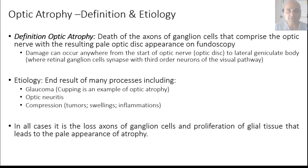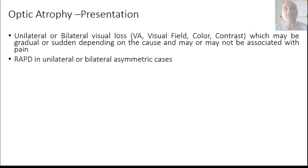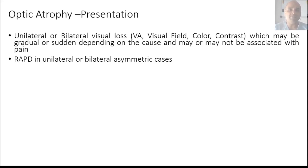Optic atrophy manifests in the optic disc because it is the place where axons are leaving the eye through the rim. Patients present with varying degrees of visual loss — in acuity, visual field, color, or contrast — which could be gradual or sudden, with or without pain, depending on the cause. If unilateral, there will be an RAPD; if bilateral asymmetric, there will also be a relative afferent pupillary defect.